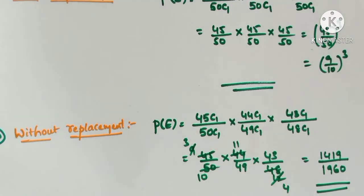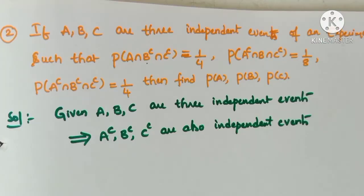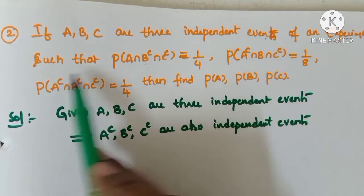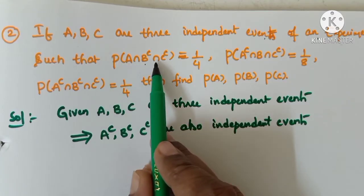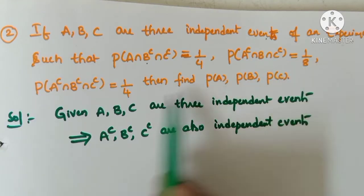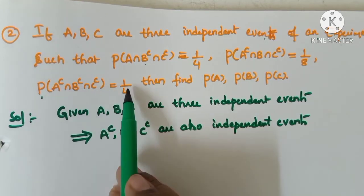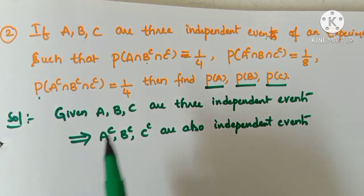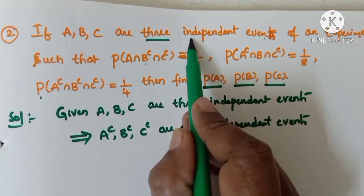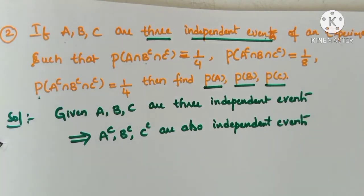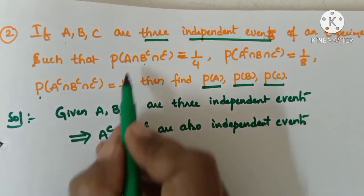This is a very important case for the probability. Now we will see the second question in Exercise 9c. If A, B, C are three independent events of an experiment, when the events are independent, their complements are also independent events.